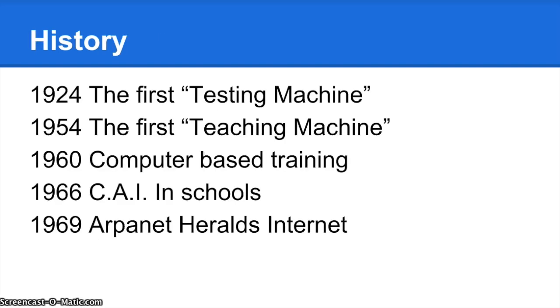Now we will talk about the history of e-learning. In 1924, the first testing machine was made. Ohio State University professor Sidney Percy invented the automatic teacher, the first device in electronic learning.